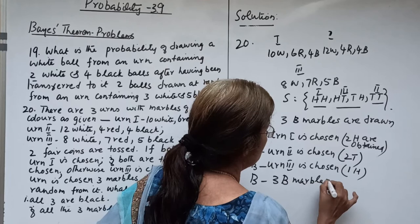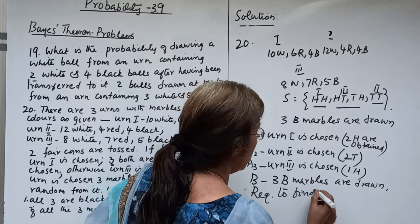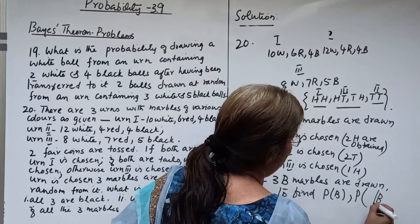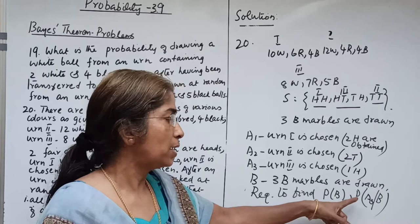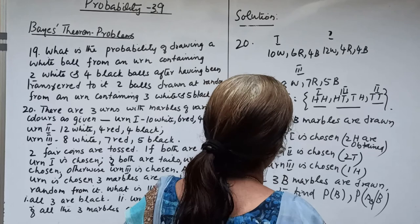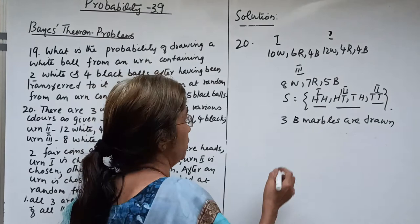B is the event that 3 black marbles are drawn. We require to find P(B) and P(A3 given B). P(B) is obtained using the total probability rule and the conditional probability by Bayes' theorem. P(A1) equals P(HH) equals 1 by 4, P(A2) equals P(TT) equals 1 by 4, and P(A3) equals P(HT or TH) equals 2 by 4.